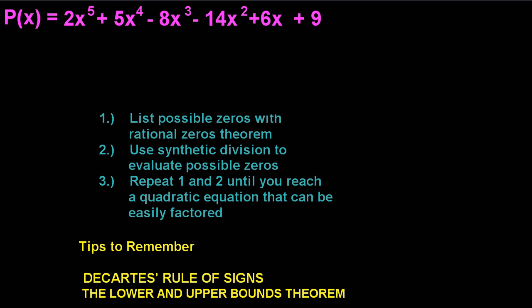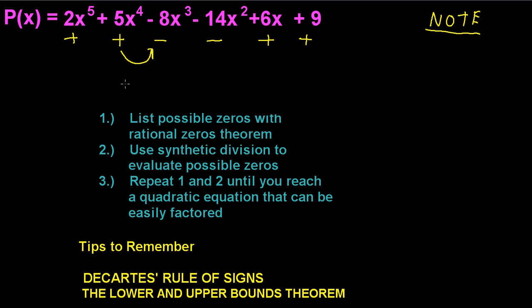Before we get started, we can use Descartes' rule of signs. We look at the variations in the sign of the coefficients: positive, positive, negative, negative, positive, positive. It changes from positive to negative once, and from negative to positive again — so we have two sign changes. That means we have two or zero positive roots.